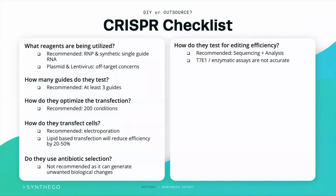How are they testing editing efficiency? We recommend some form of sequencing — whether it's Sanger or NGS — and then analyzing using software such as ICE. If they're using T7E1 or other enzymatic assays, as we mentioned in the analysis module, these are not accurate, and we do not recommend these be used for any editing workflow.